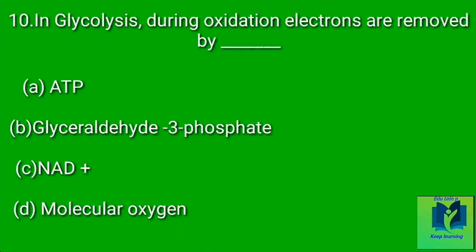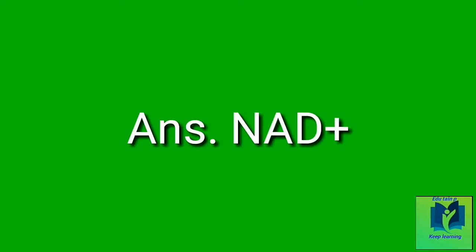In glycolysis, during oxidation, electrons are removed by: Option A: ATP. Option B: Glyceraldehyde 3-phosphate. Option C: NAD⁺. Option D: Molecular Oxygen. Answer: NAD⁺.